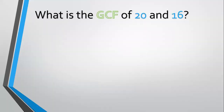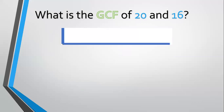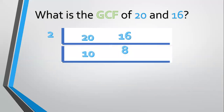Another example — how about 20 and 16? List them: 20 and 16. The common factor is 2. 20 divided by 2 equals 10. 16 divided by 2 equals 8. Can we divide again by 2? 10 divided by 2 equals 5. 8 divided by 2 equals 4. Now there is no common factor. So multiply the common factors: 2 times 2 equals 4. The GCF of 20 and 16 is 4.